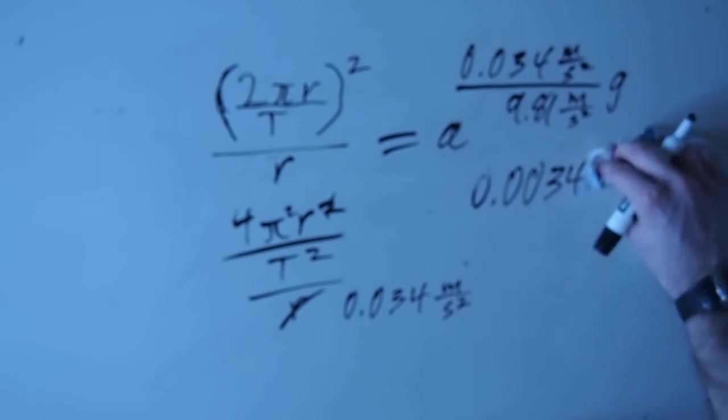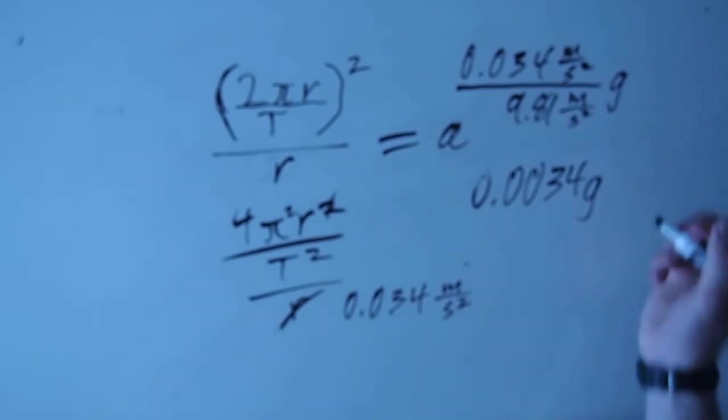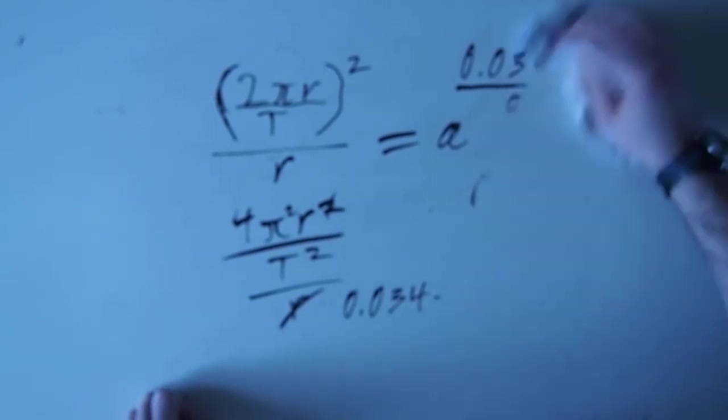That's a fraction of g. There we go. All right, so that's part A. Part B is a little more interesting. If the radial acceleration at the equator is greater than g, objects will fly off the Earth's surface and into space. What would the period of the Earth's rotation have to be for this to occur?